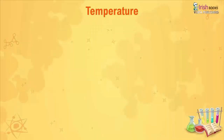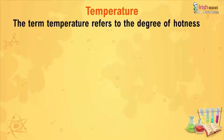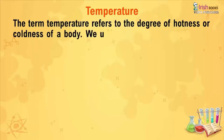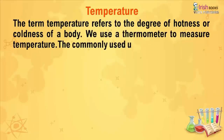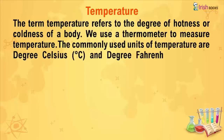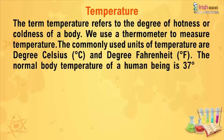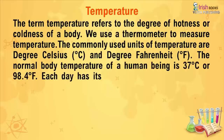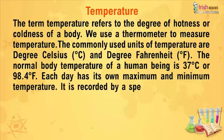Temperature: The term temperature refers to the degree of hotness and coldness of a body. We use a thermometer to measure temperature. The commonly used units of temperature are degree Celsius and degree Fahrenheit. The normal body temperature of a human being is 37 degrees Celsius or 98.4 degrees Fahrenheit. Each day has its own maximum and minimum temperature.